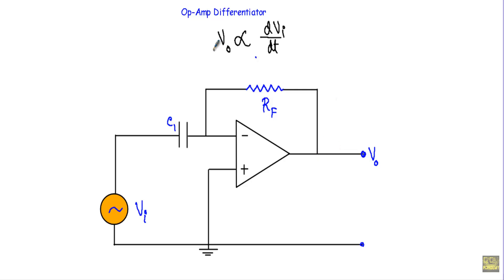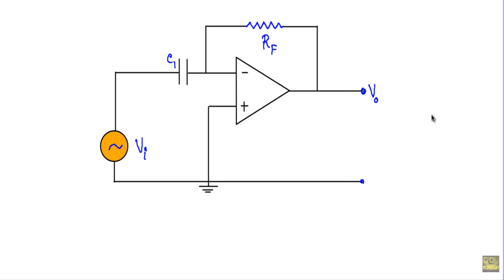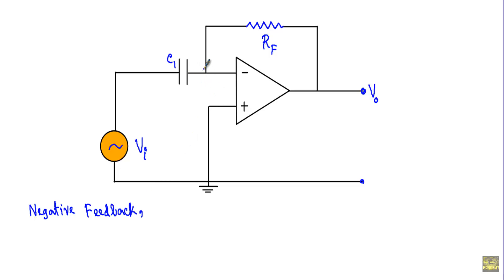Now I will show you the derivation of VO, which will be directly proportional to the first derivative of the input voltage. The output terminal is connected to the inverting terminal through a feedback resistor. When the output is connected to the inverting terminal through any passive element, the circuit is in negative feedback. Due to negative feedback, the inverting and non-inverting terminal voltages will be equal.